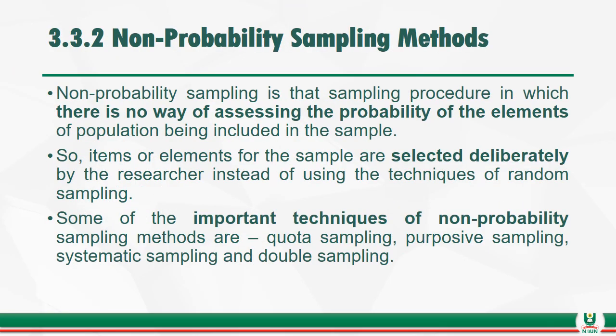Non-probability sampling is that sampling procedure in which there is no way of assessing the probability of the elements of the population being included in the sample. Items or elements for the sample are selected deliberately by the researcher instead of using the techniques of random sampling. Some of the important types of non-probability sampling are quota sampling, purposive sampling, systematic sampling, and double sampling.